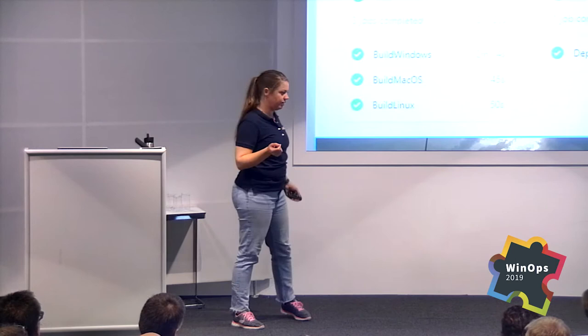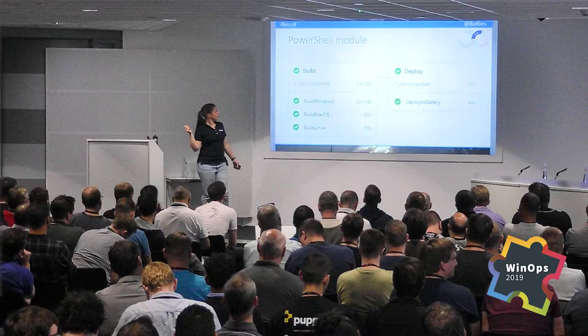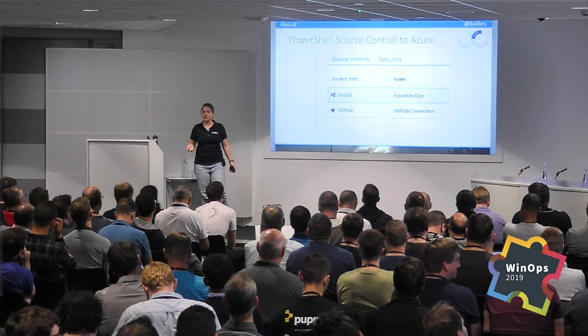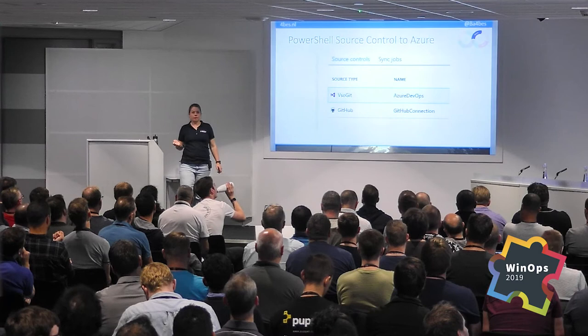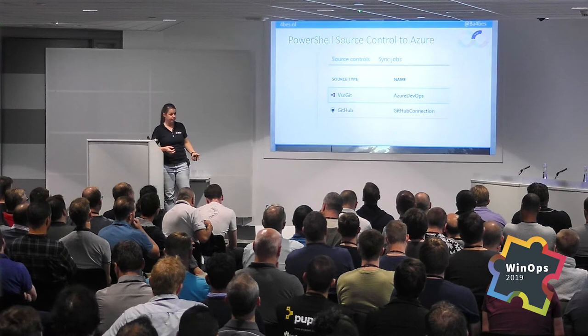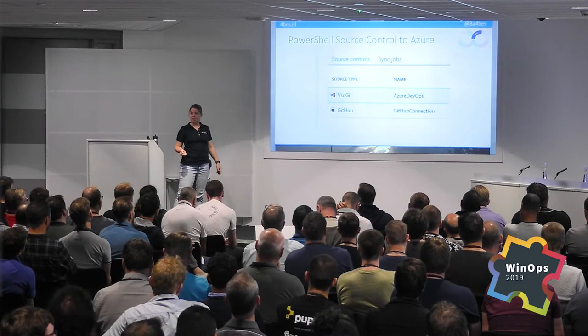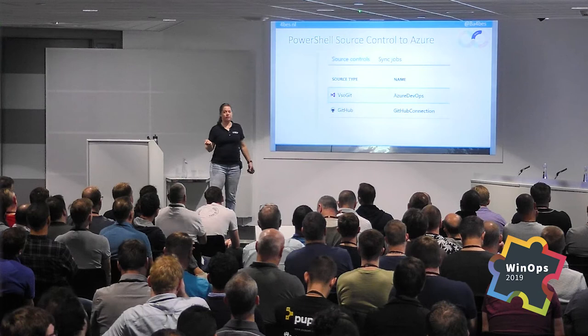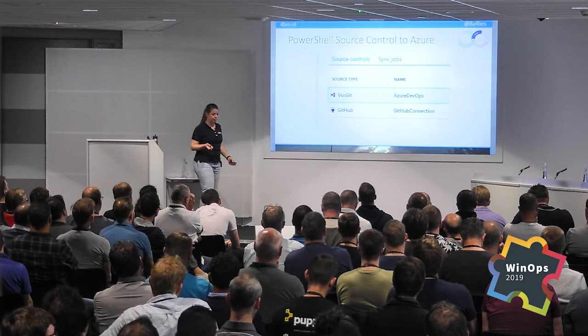I realize not everybody has a module in the gallery. You can use this for source control to Azure — you have a repository, and in an Azure Automation account you can say you want all the runbooks to match the PowerShell scripts in that repository. You can do this with GitHub as well, or with Azure DevOps. You don't even need a pipeline — you set it up in Azure. And you now have consistent scripting with auditing and history in your Azure Automation account.